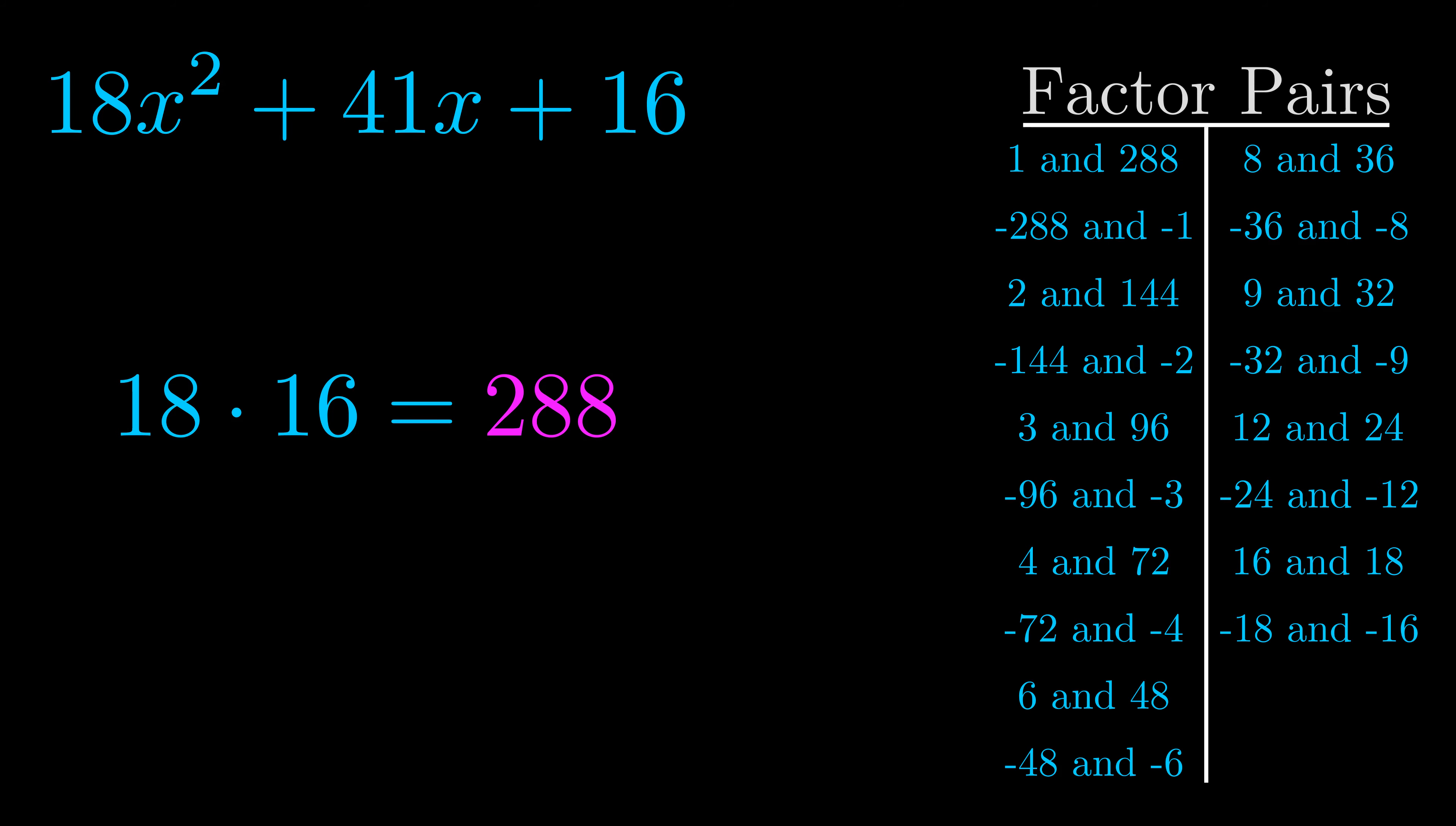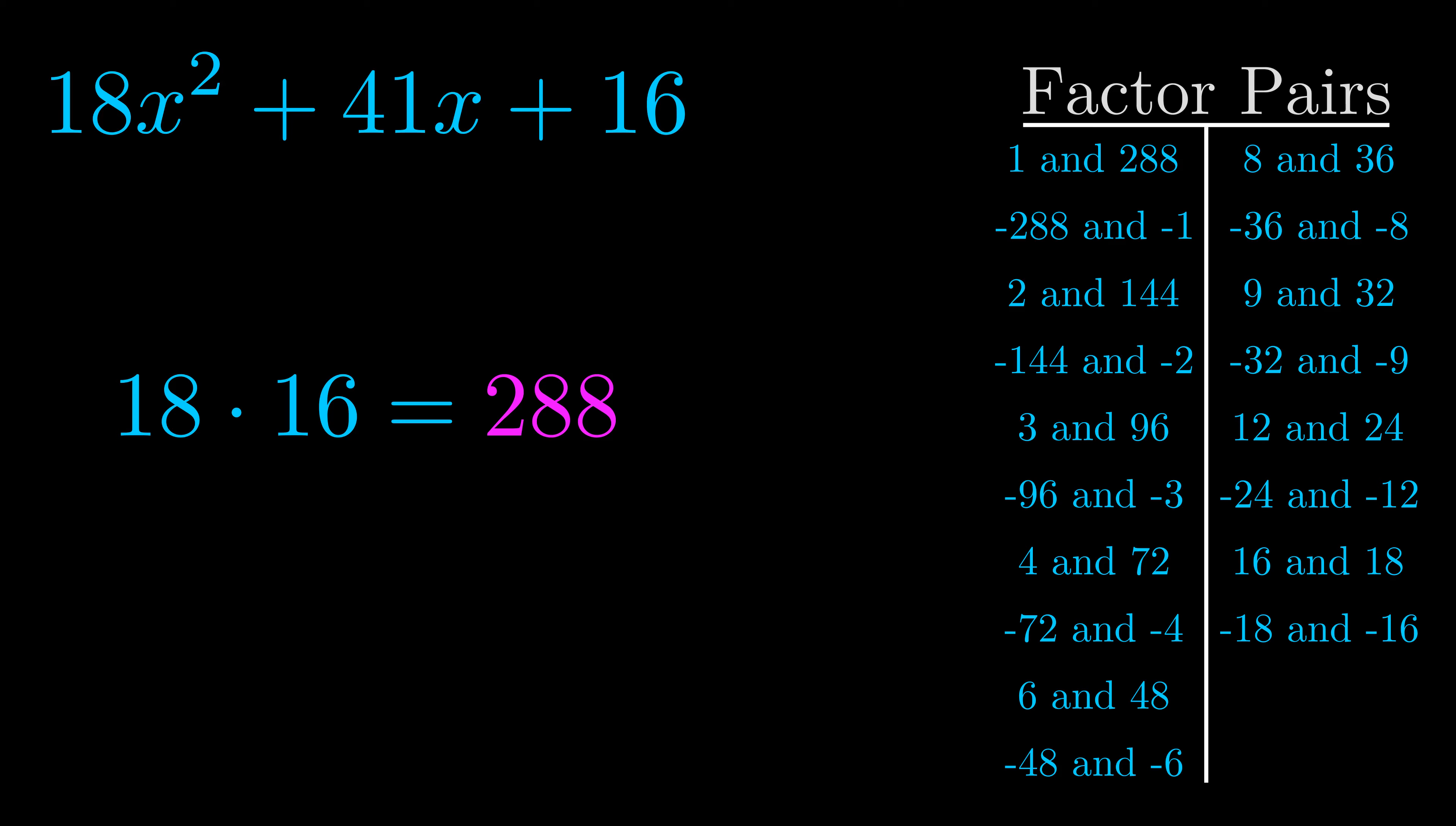Now once you have these factor pairs the goal is to find which of these pairs adds to the b value. The b value is the coefficient on the x term. That's the middle term, the one that we haven't done anything with yet. And really this is the only factor pair that we need.